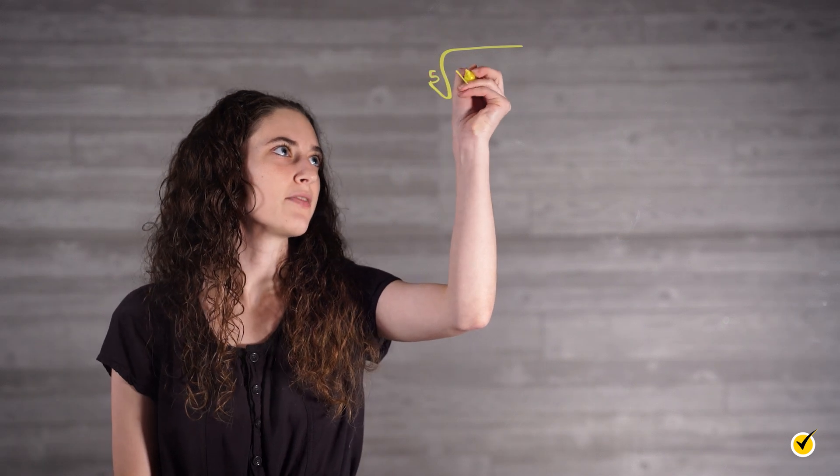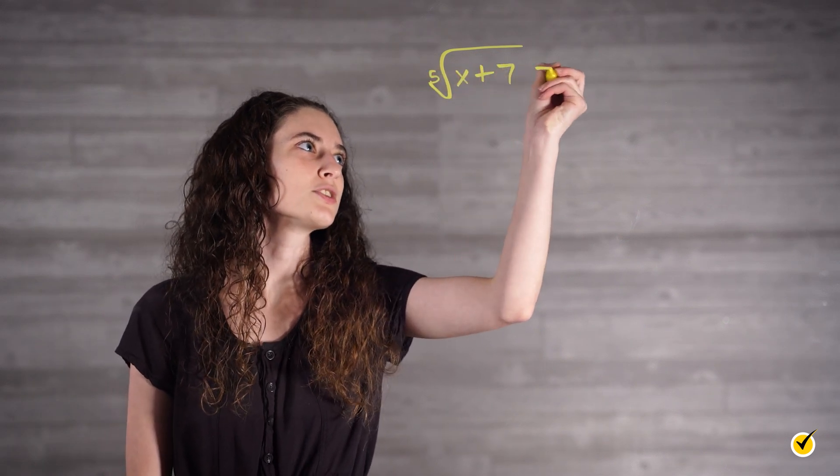Now let's look at one with a root other than 2. Let's try this one. The fifth root of x plus 7 is equal to 2.